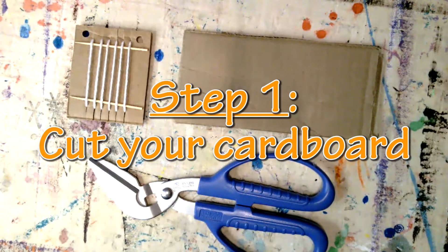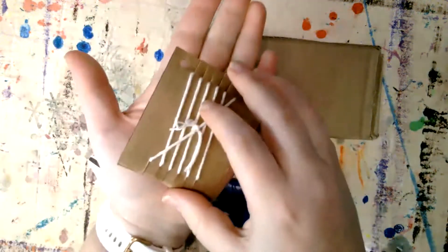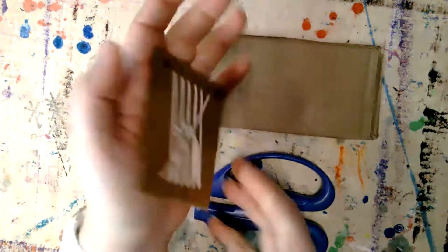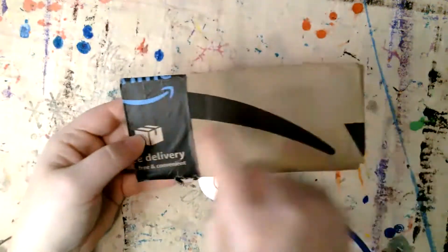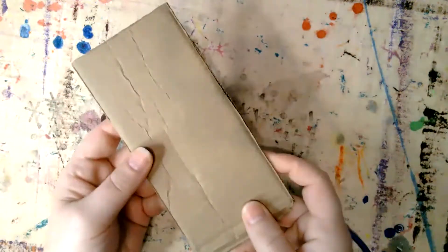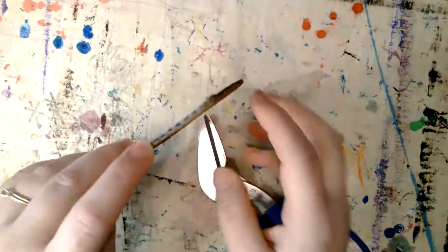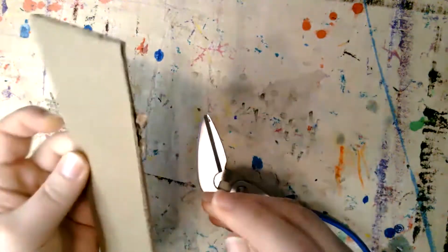First thing you need to do is cut your cardboard down to size. My tiny loom fits in the palm of my hand, so that's what size you're going to make yours. I just use the flap of an Amazon box. The only thing you have to pay attention to is where the corrugations run.